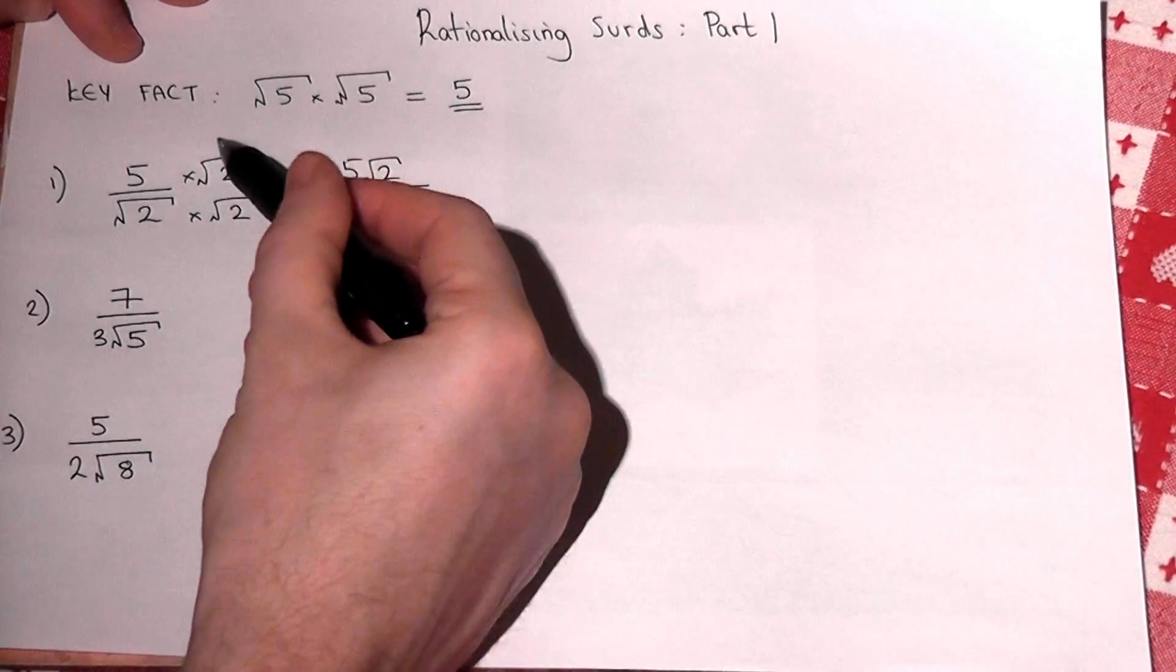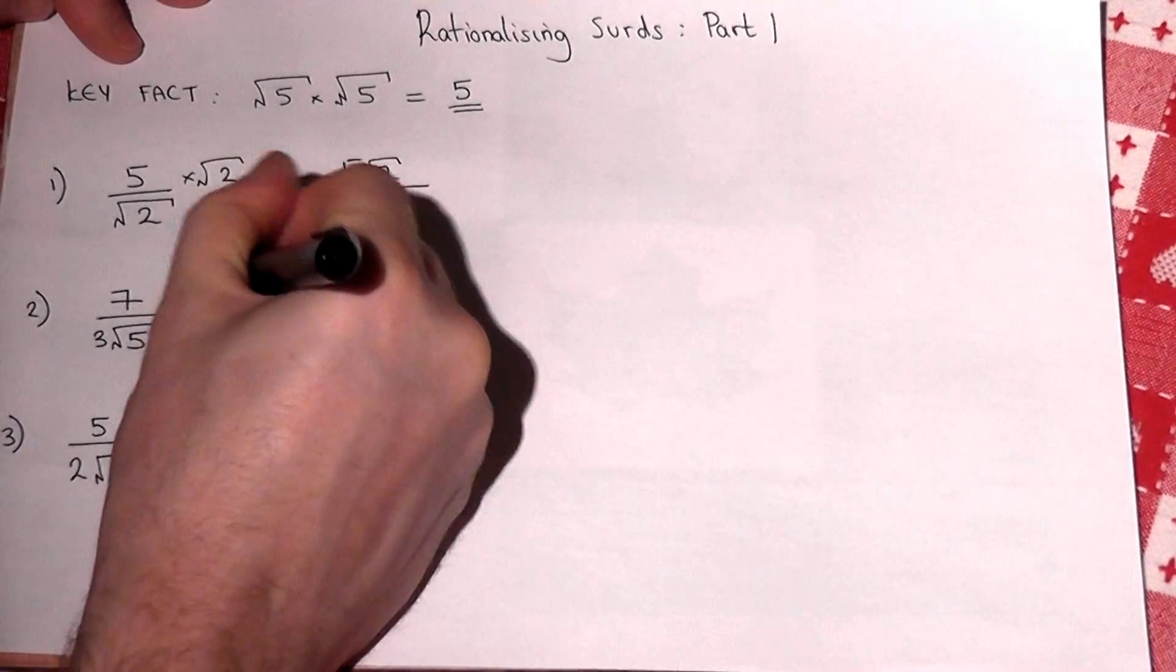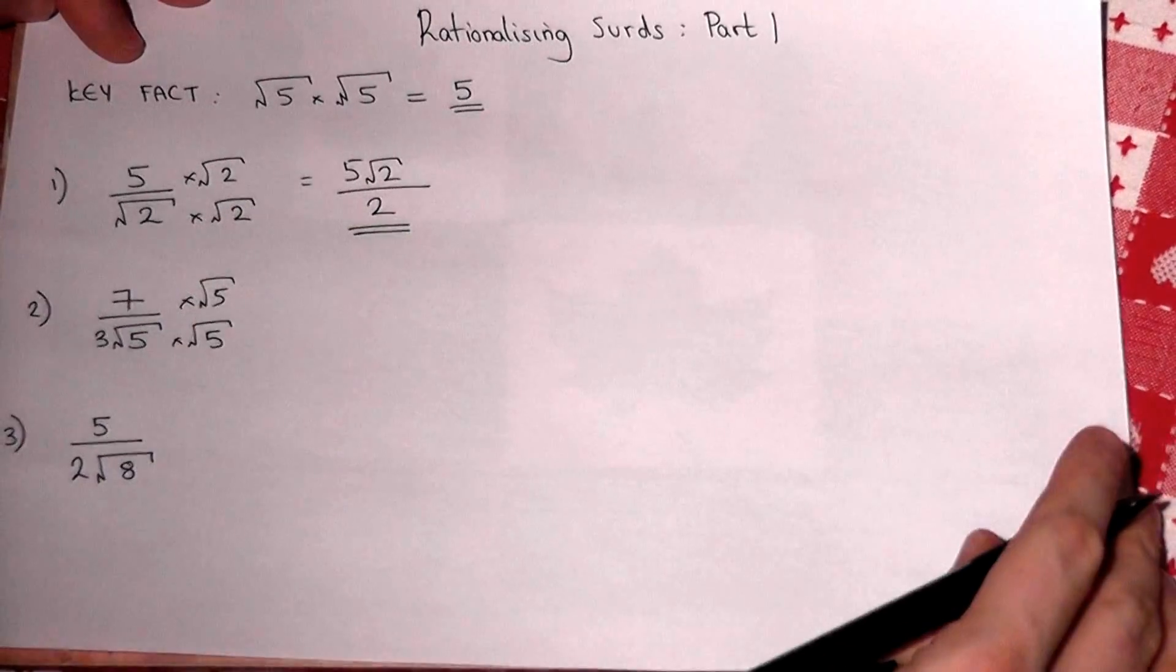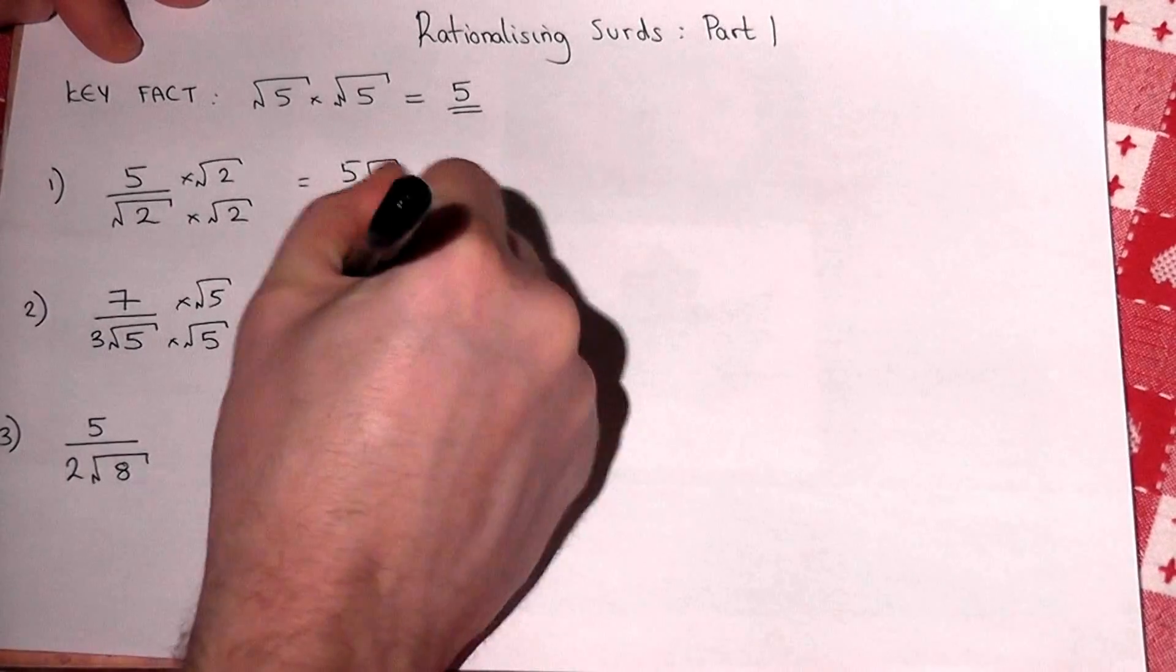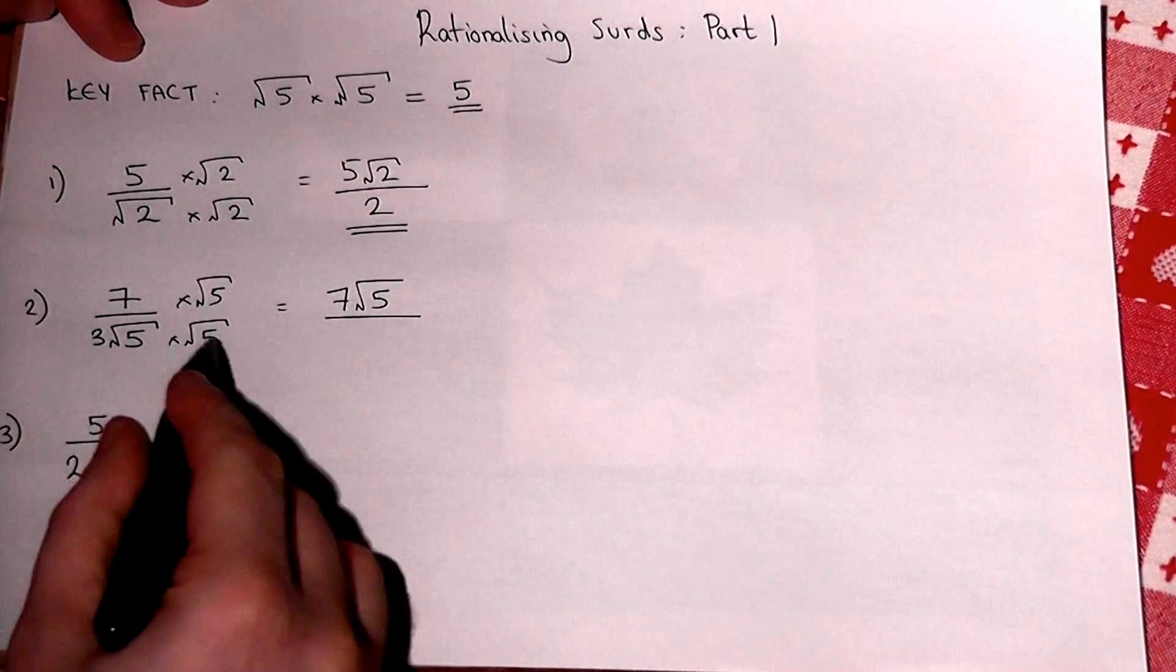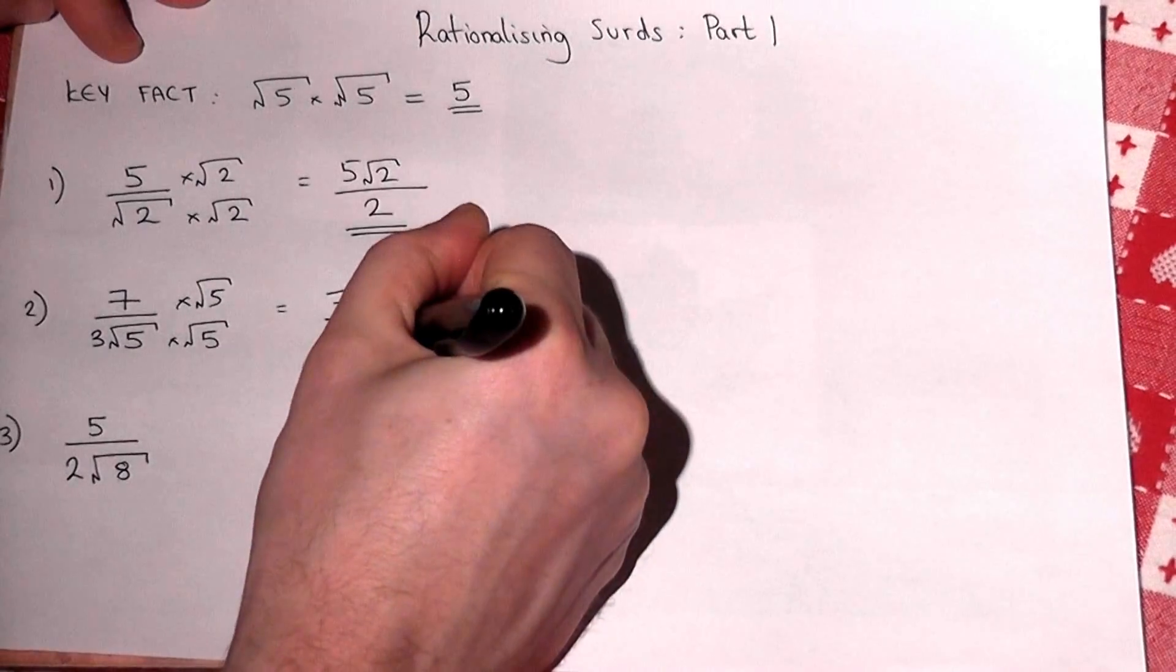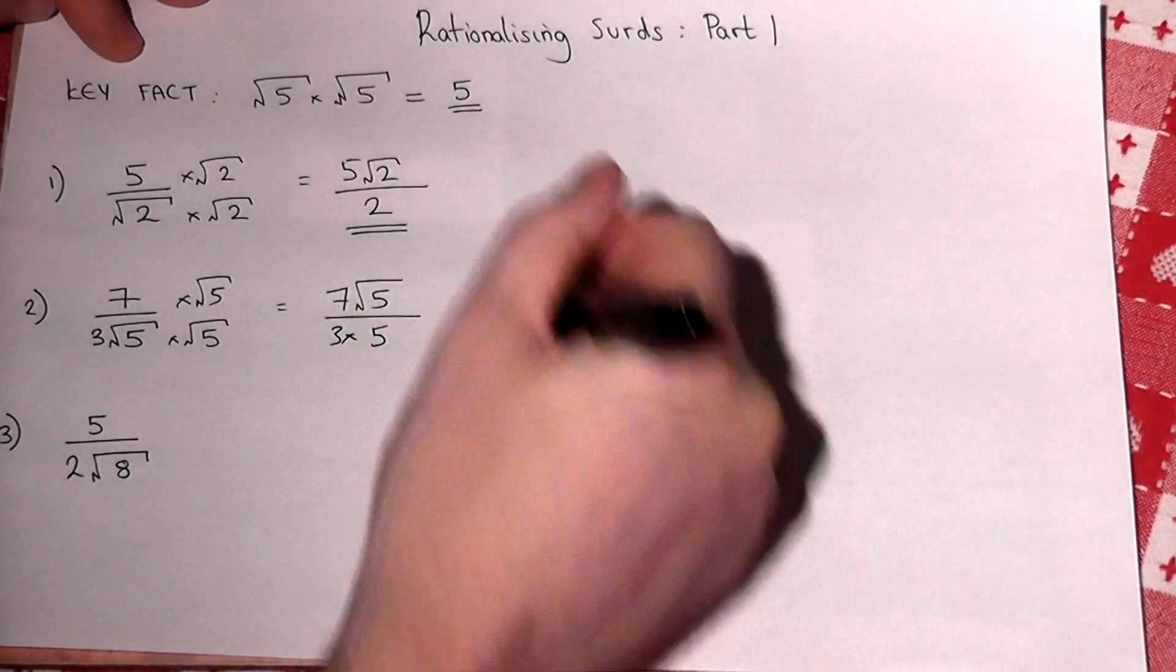So the second one I would times by √5. So the top just becomes 7√5. Now there's a 3 there, there's also a √5 × √5. Well, √5 × √5 is 5 and there's a 3 there, so it just becomes 7√5 over 15. Again, the surd has passed from the bottom to the top of the fraction.